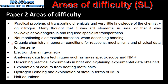Next we have organic chemistry in general — conditions for reactions, mechanisms, and physical data for benzene. Next we have electron domain geometry, which I already covered in the paper 1 areas of difficulty. For analyzing data from techniques such as mass spectroscopy and H1NMR, all I can suggest is that you're familiar with the techniques, especially analyzing the spectra.